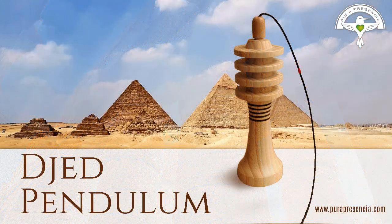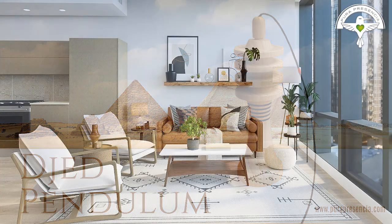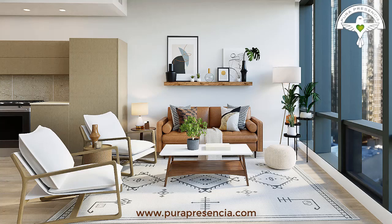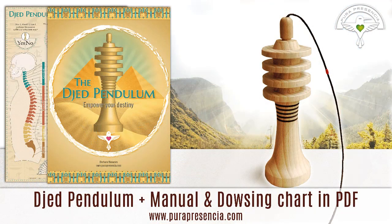We've created this pendulum with the intention of working in different ways. This pendulum can be used as a harmonizer object. You can place it anywhere in your living environment where you want to create harmony, because this pendulum, as you will see in the manual, is balancing the electromagnetic structure of everything you are focusing the Jed upon. If you are working with yourself, it's going to help you balance the cosmotelluric energies within you. The Jed is also going to be a very good tool for working with your spine on an energy level.